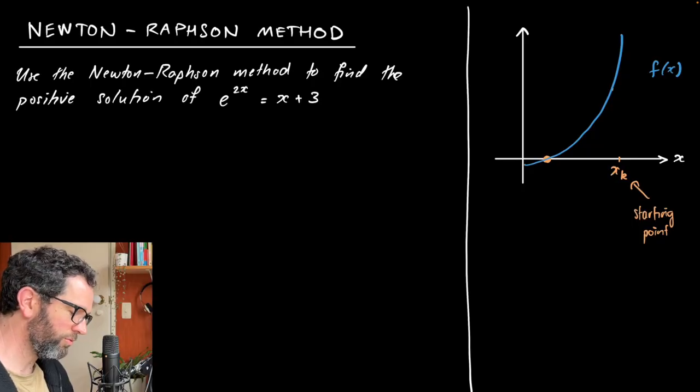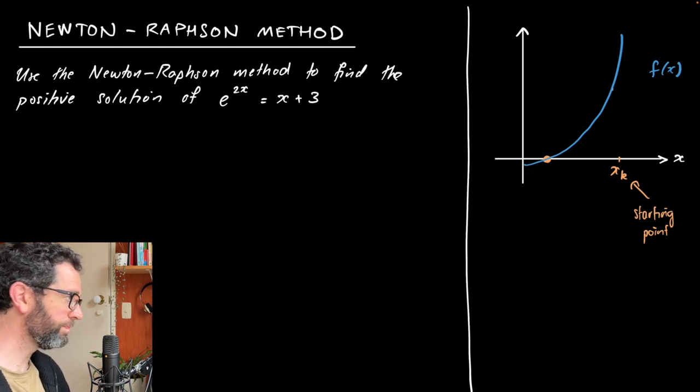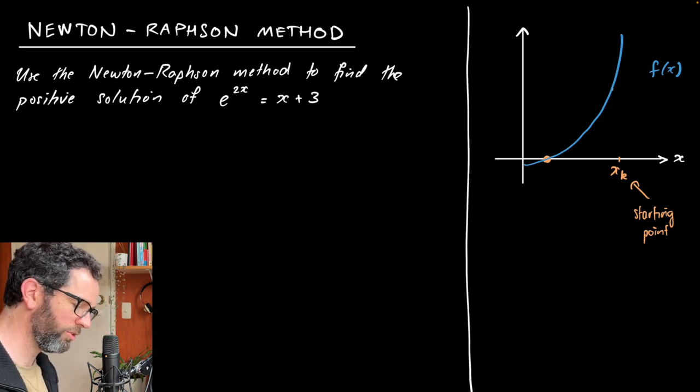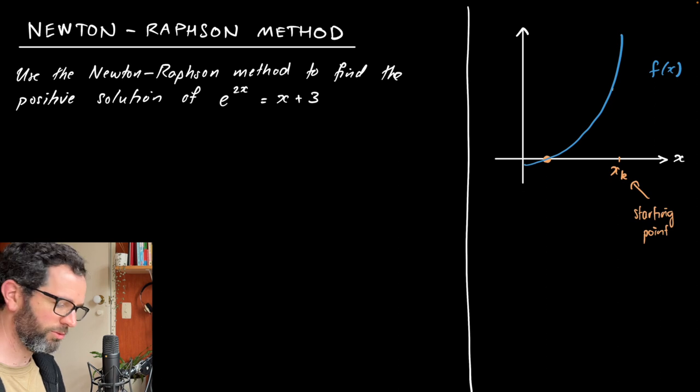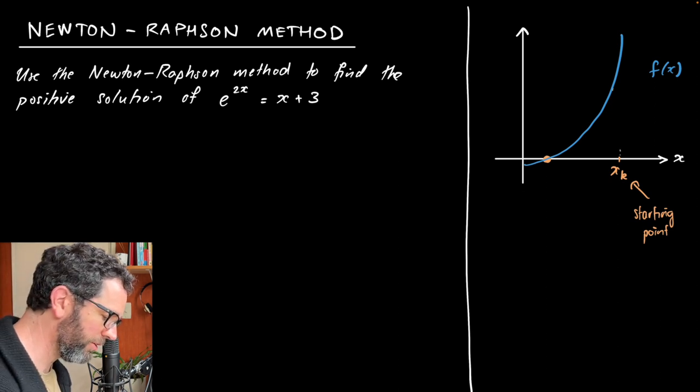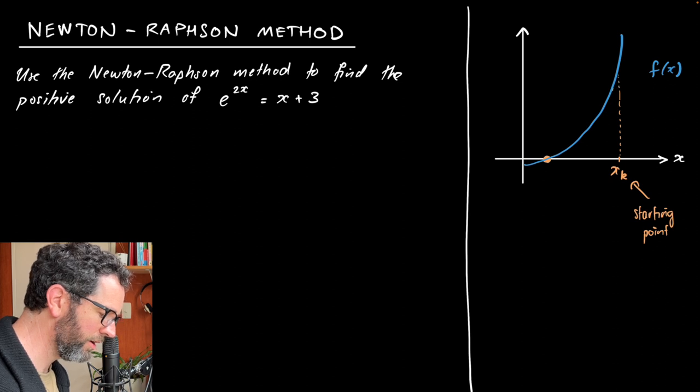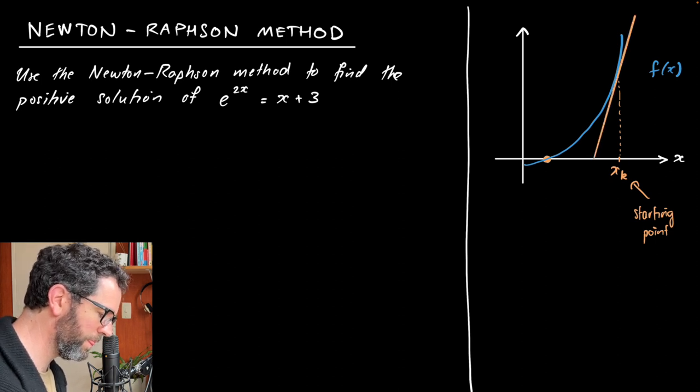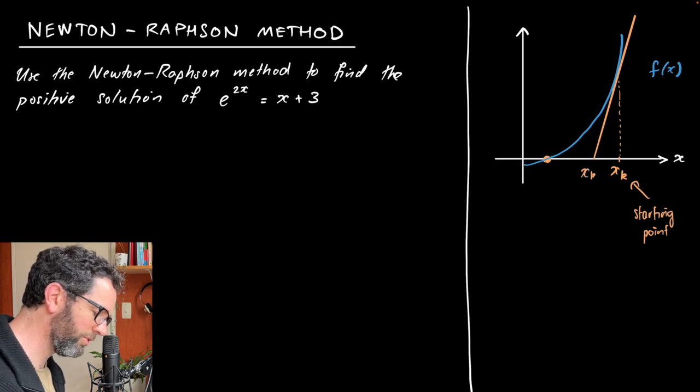So the way the Newton-Raphson method works is pretty straightforward. Let's just have a go at it. Geometrically, we start at a certain point, and I'm going to call it xk because I'm imagining we've done k steps already. All we do is basically go up to our function, and then we draw the tangent line at that point. So you'll notice that the Newton-Raphson method, in order to use it, we need to know what the derivative of our curve is, otherwise we can't make this tangent line. So we draw that line, and then we just find out where that line intersects the x-axis, and that is our new point xk plus one.